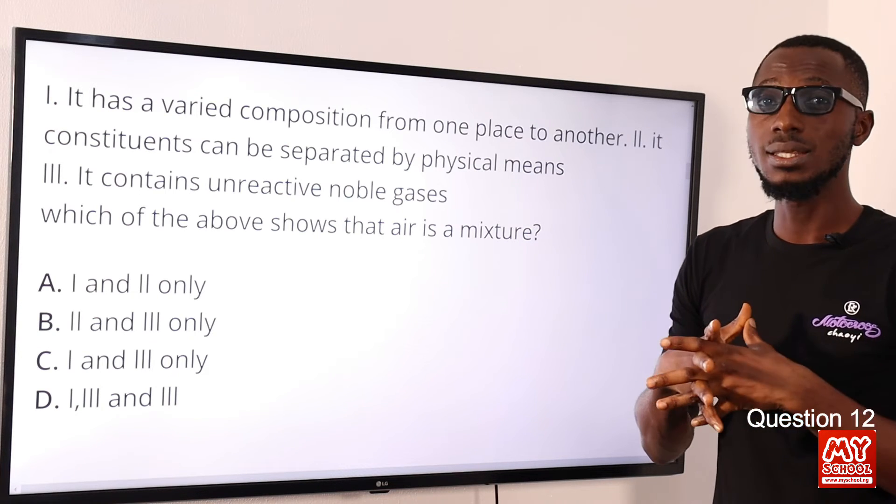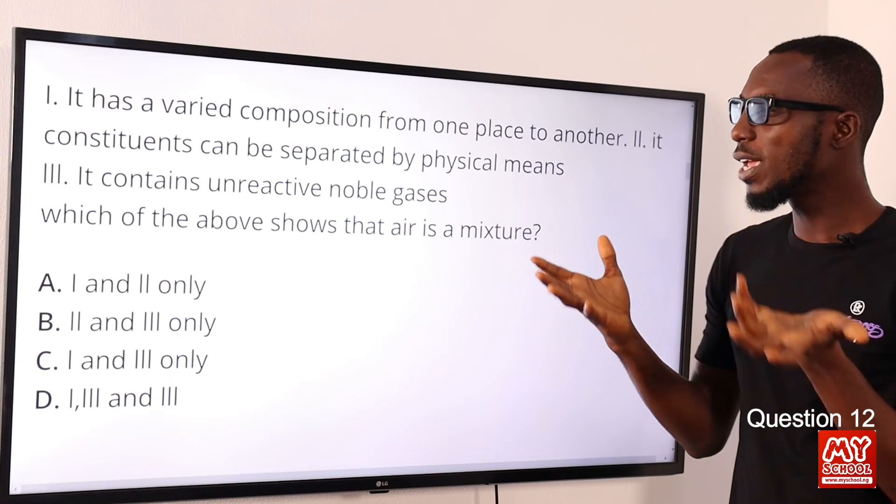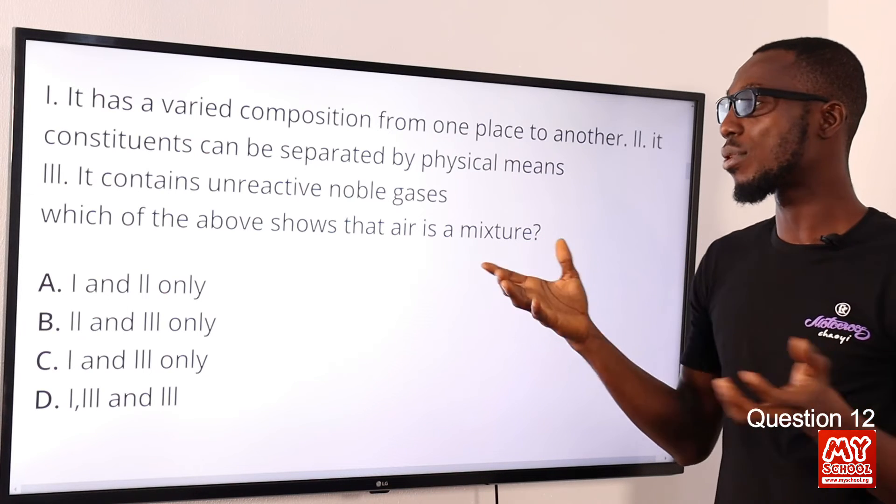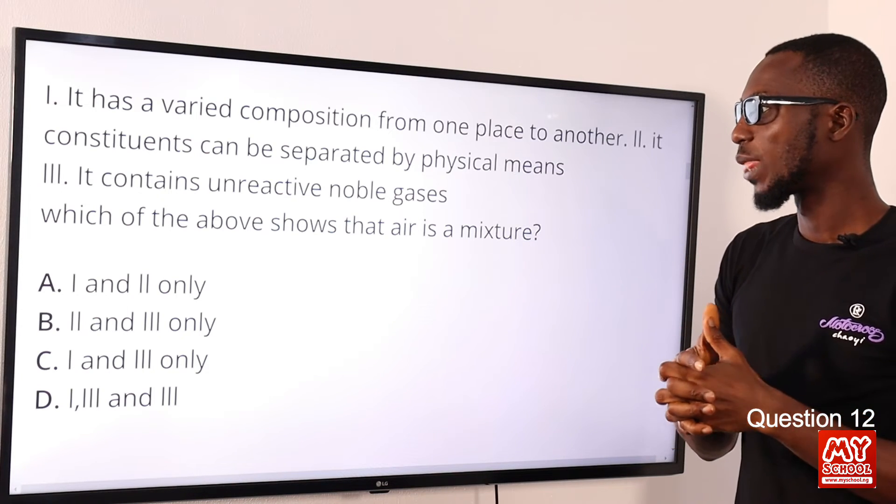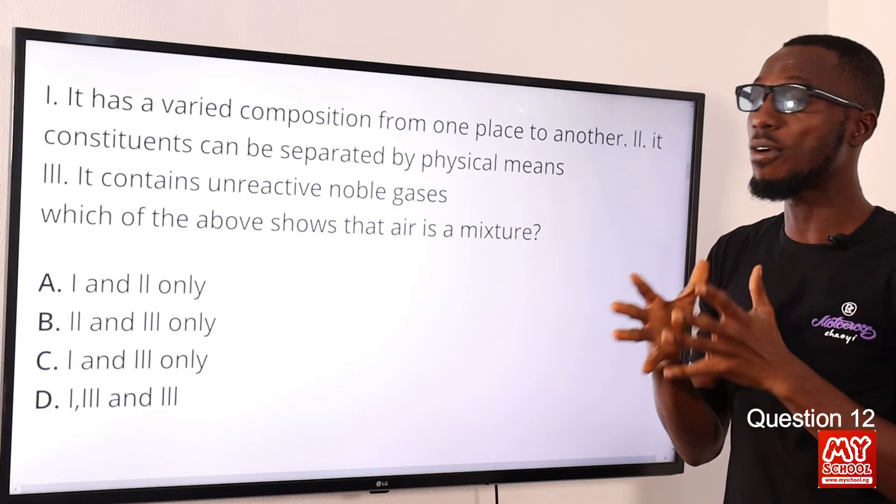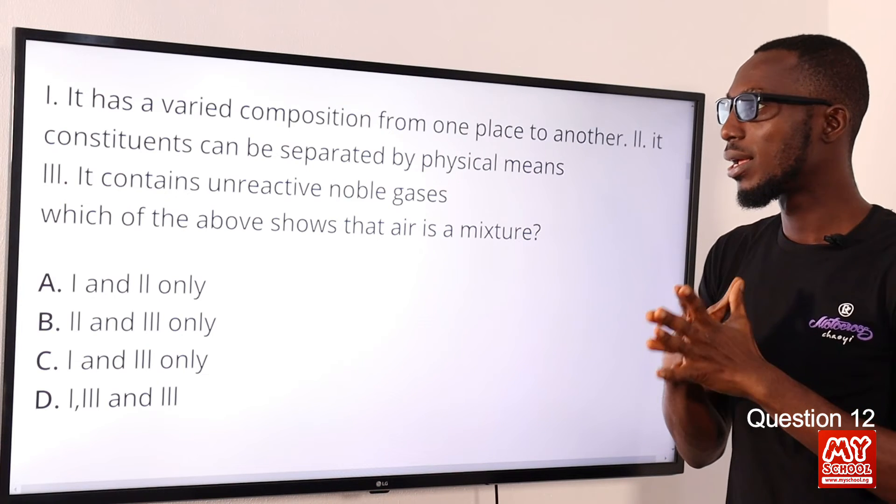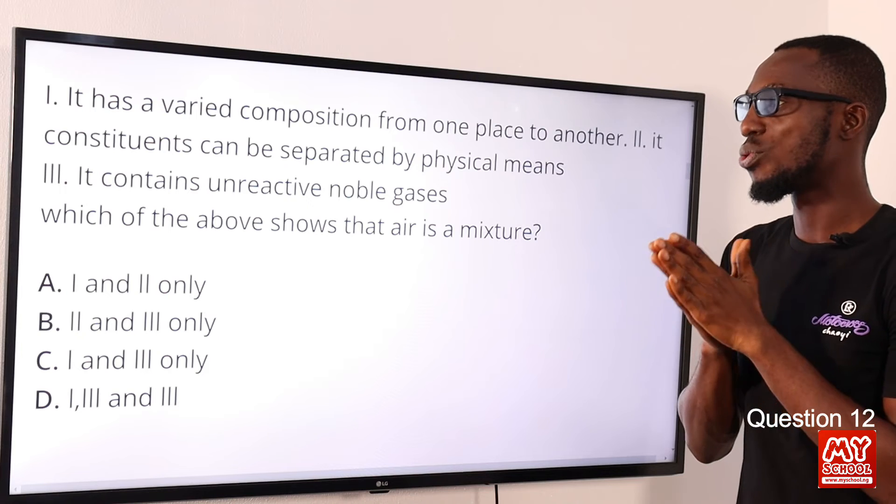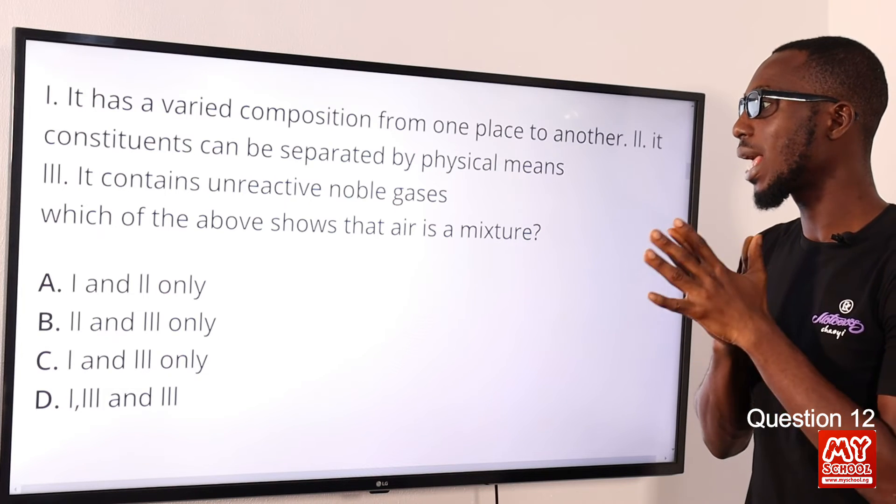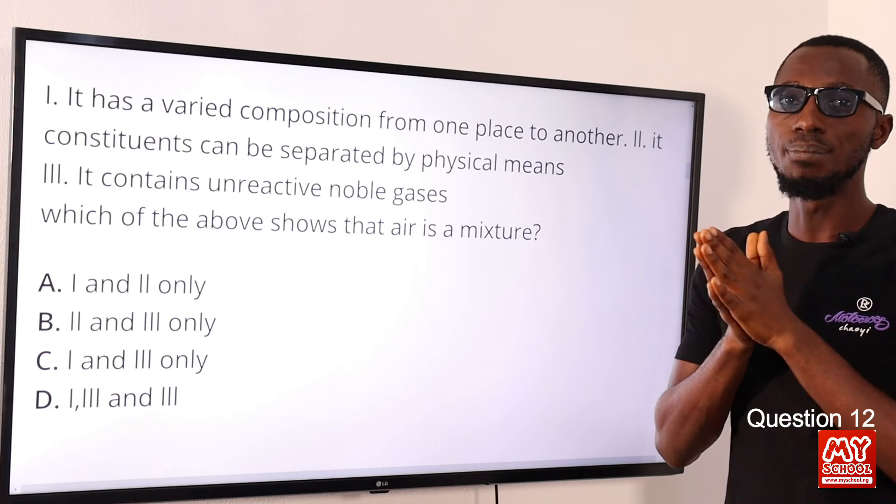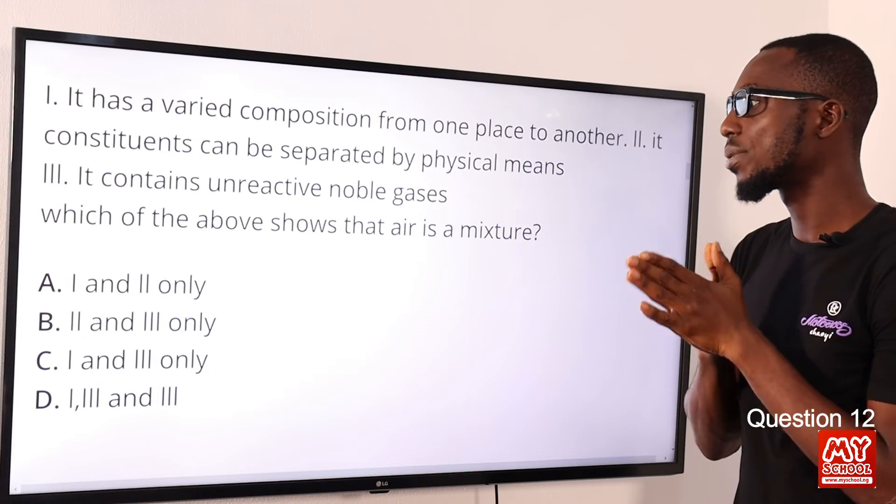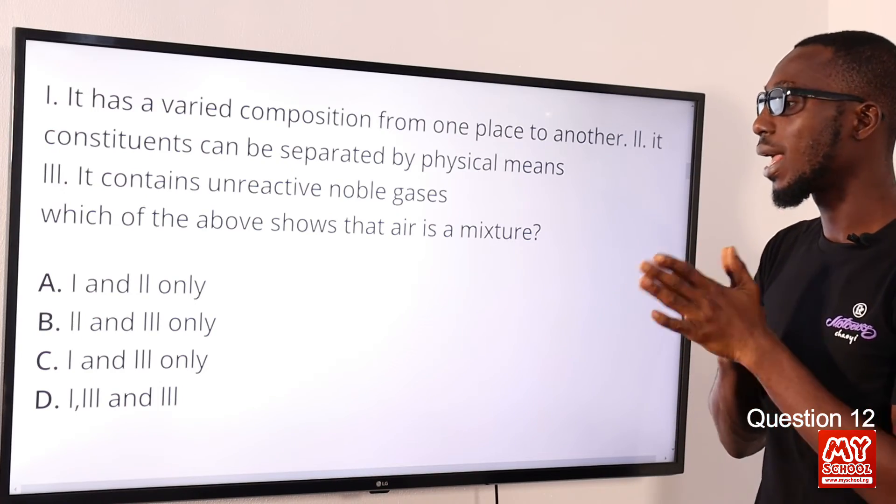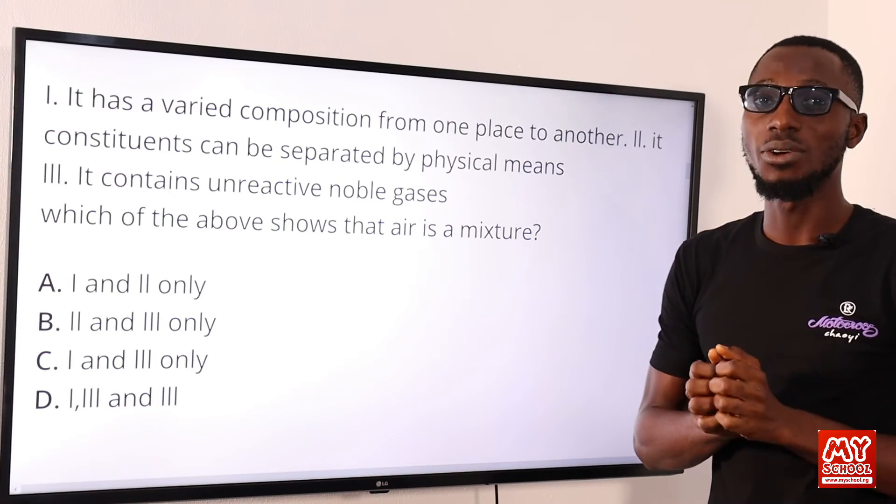Statement three: it contains unreactive noble gases or rare gases. This exists as monoatomic molecules in air, and we can also say something about noble gases—they're roughly about one percent when it comes to composition of air. So we can confirm or say confidently that statement one, statement two, and three, they are all correct. Which of the above shows that air is a mixture? Statement one, two, three show that air is a mixture, so option D is the correct option.